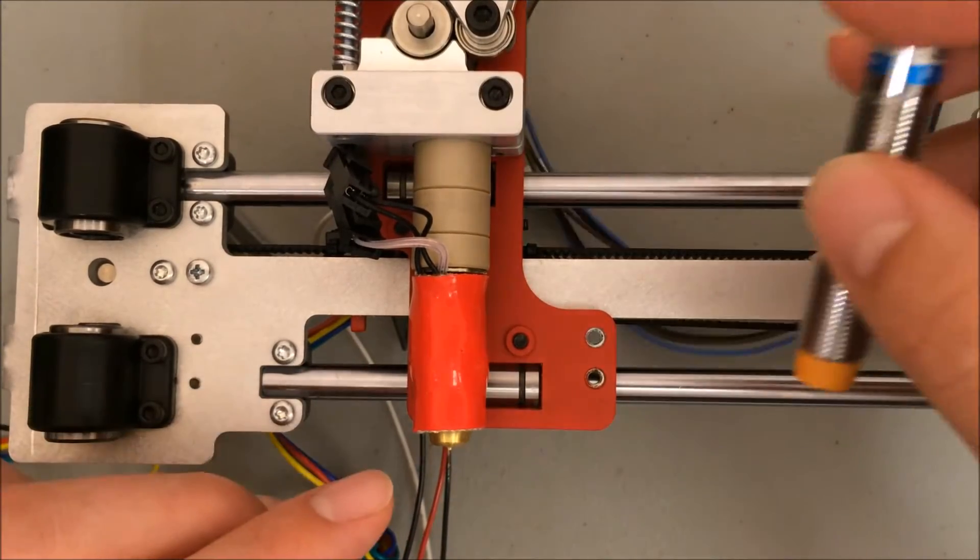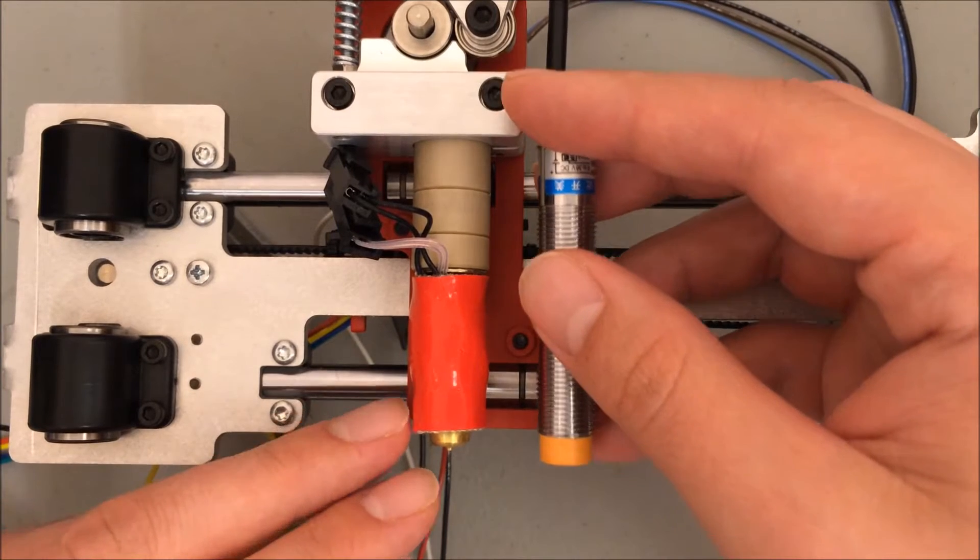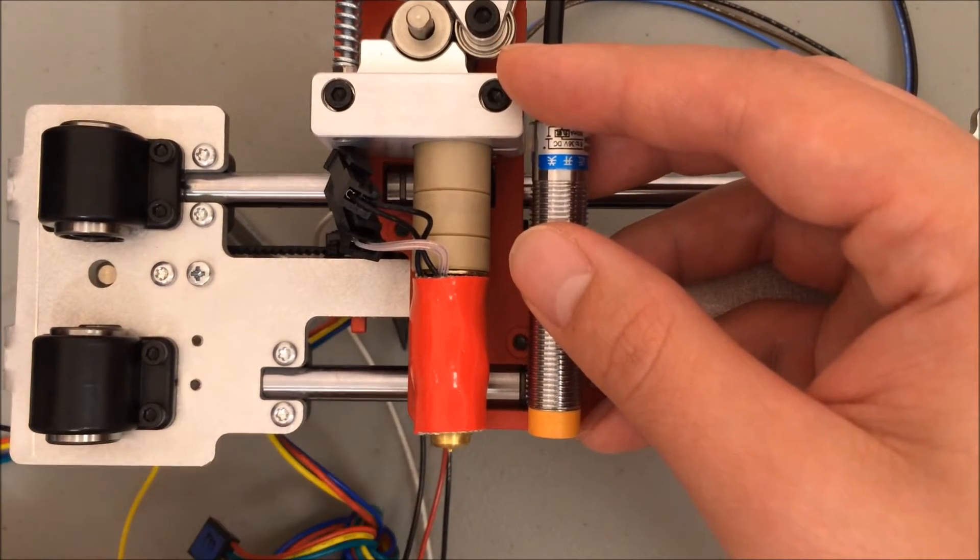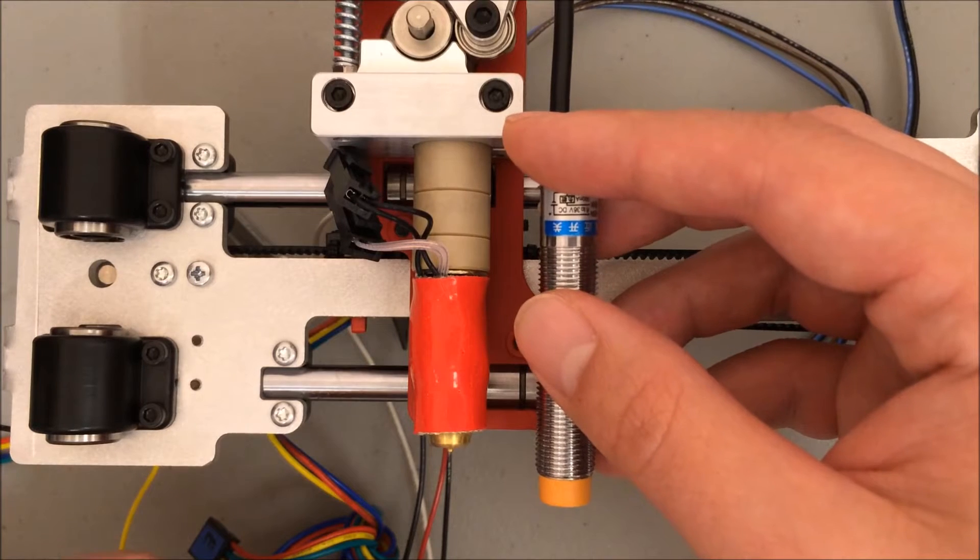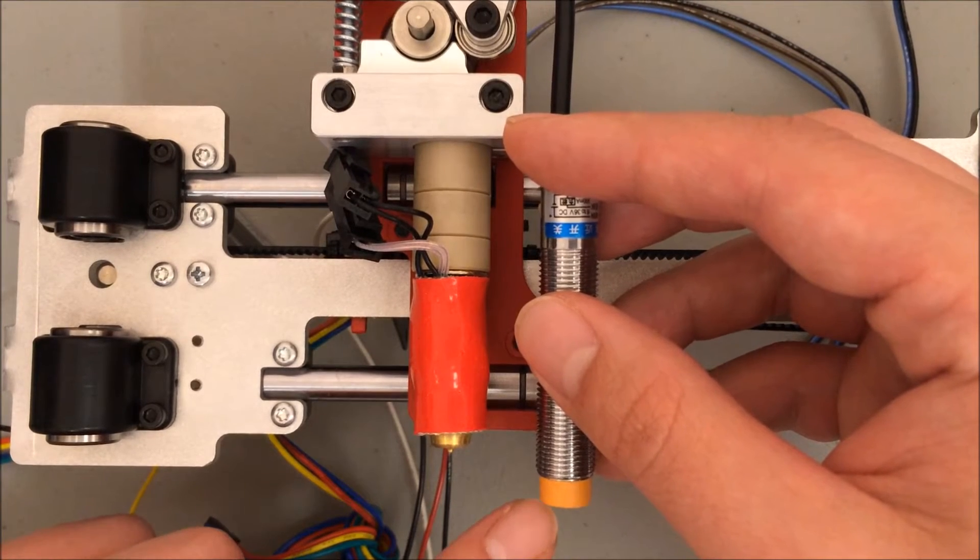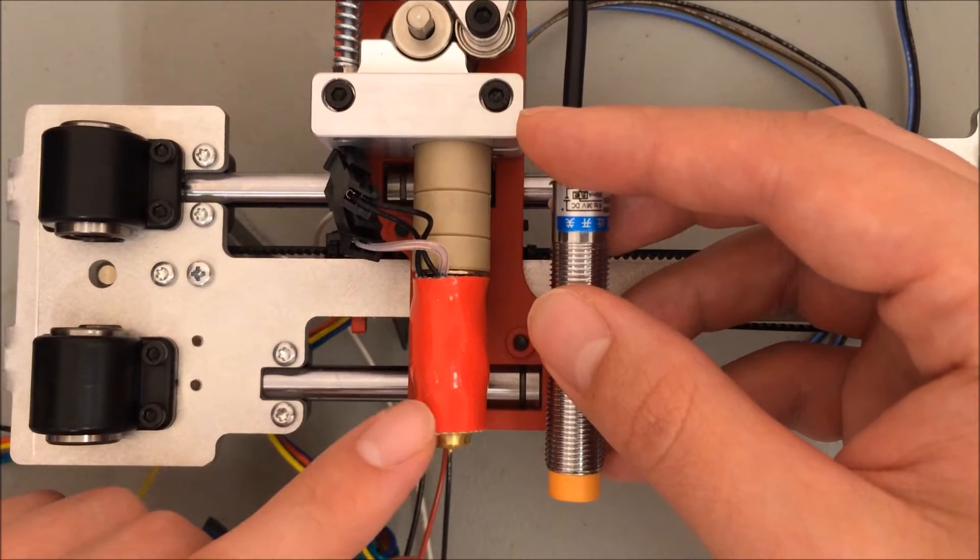It's important you position the probe at the right height. You want to make sure that the probe is higher than the tip of the hot end nozzle. If it's lower than the hot end, whenever you go to calibrate this the probe will touch the bed first. You want the other way around. You want to make sure that the hot end is lower.